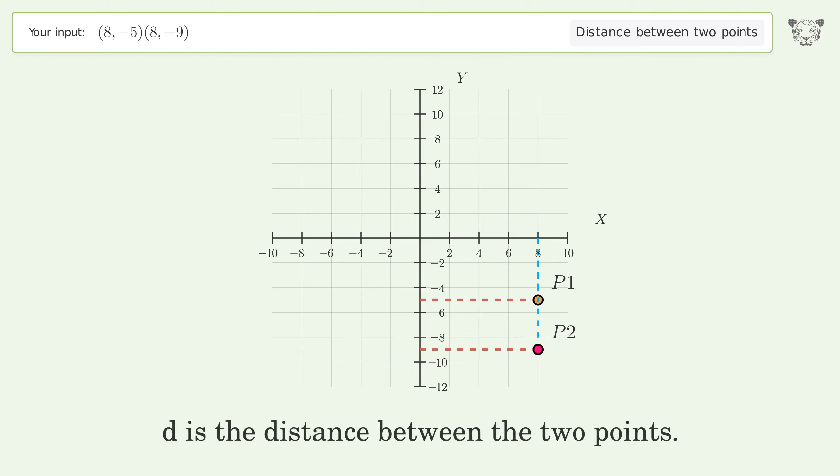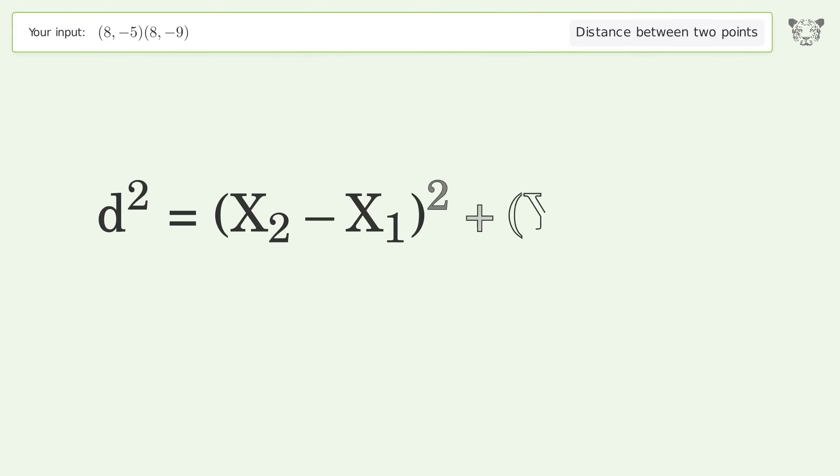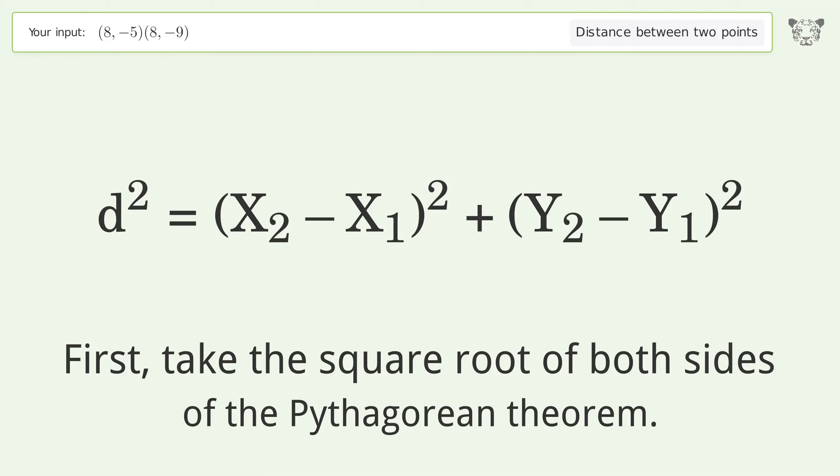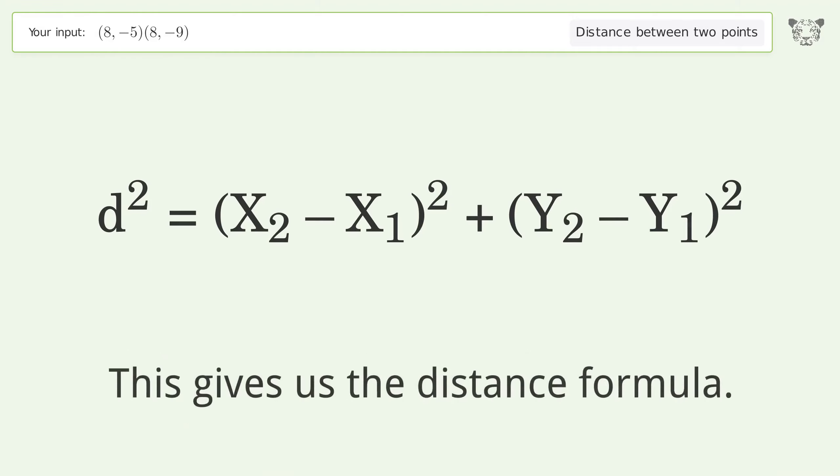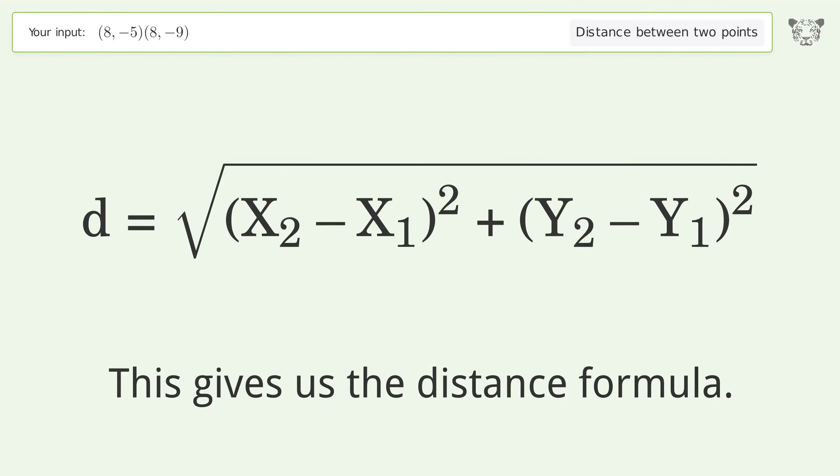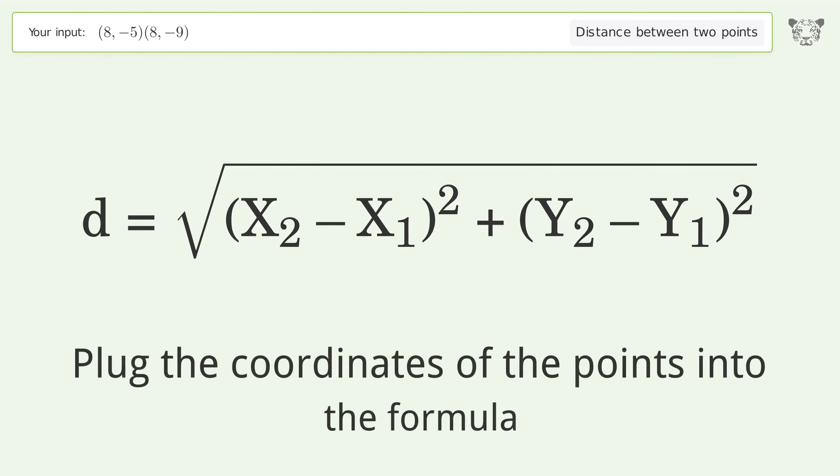d is the distance between the two points. First, take the square root of both sides of the Pythagorean theorem. This gives us the distance formula. Plug the coordinates of the points into the formula.